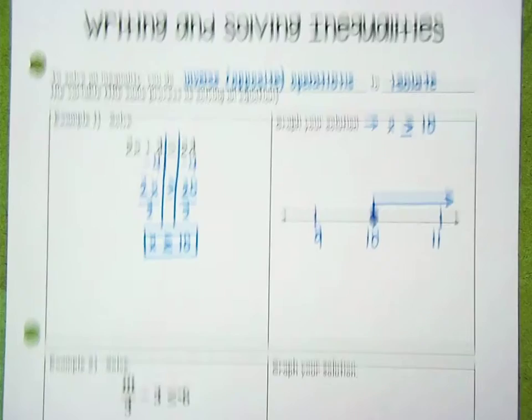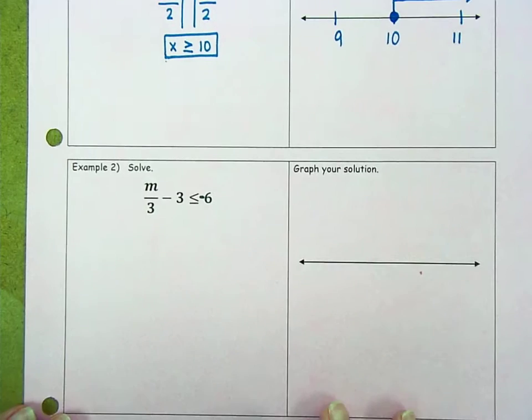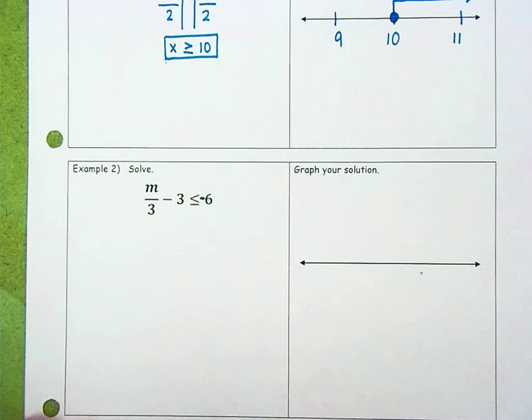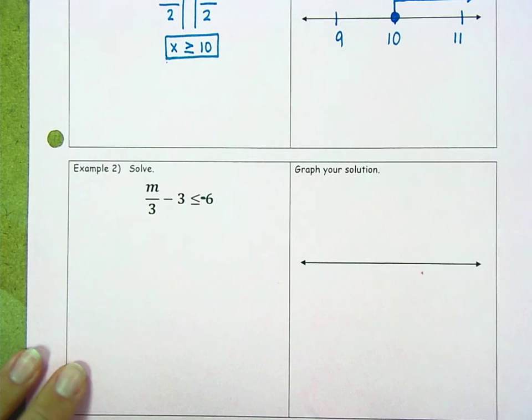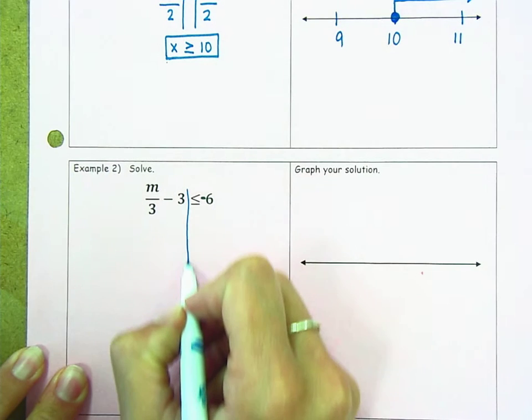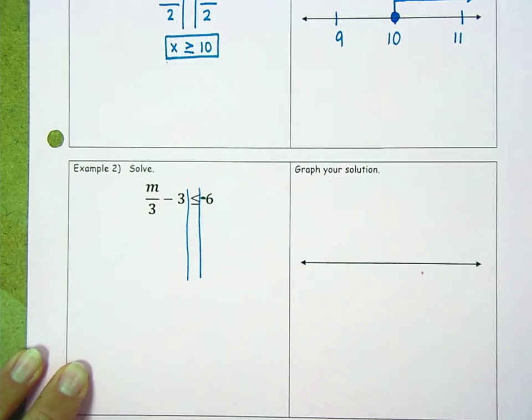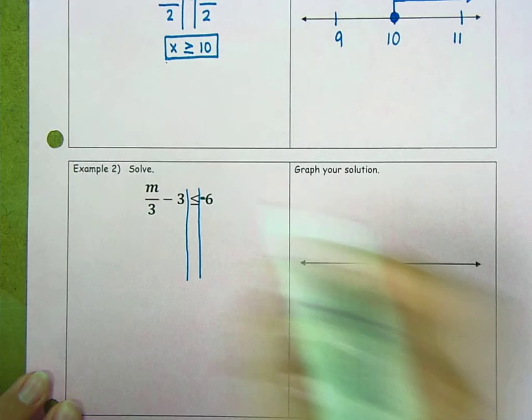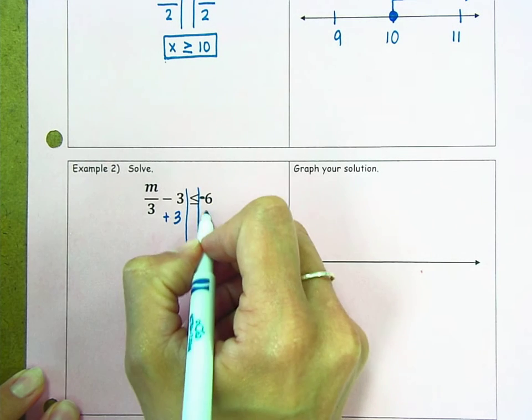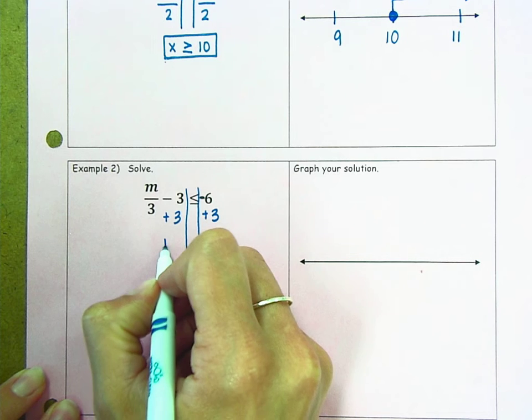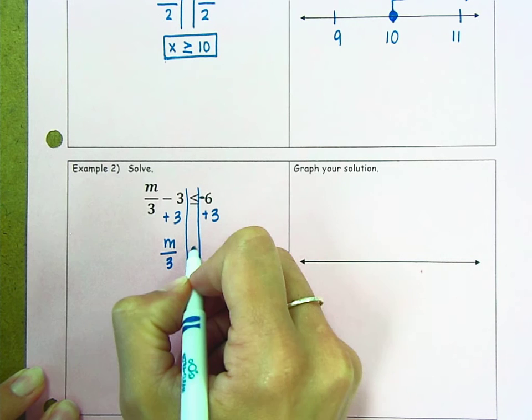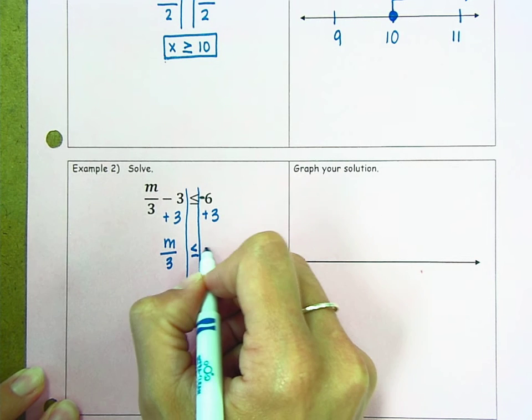Let's take a look at another example. So in example two, I have m divided by 3 minus 3 is less than or equal to negative 6. I'm going to go ahead and draw my lines in and use the process of inverse operations to solve. So we'll add 3 to both sides. So m divided by 3 is less than or equal to negative 3.